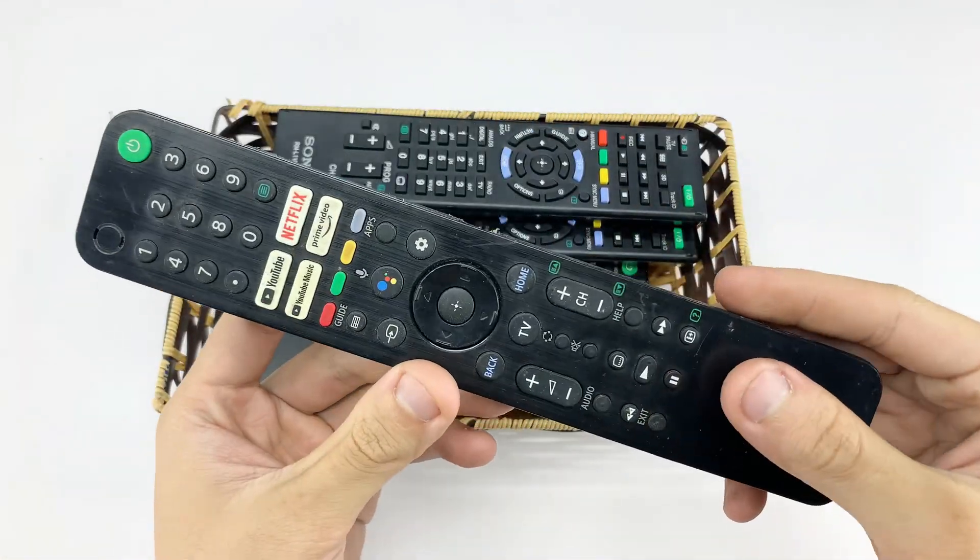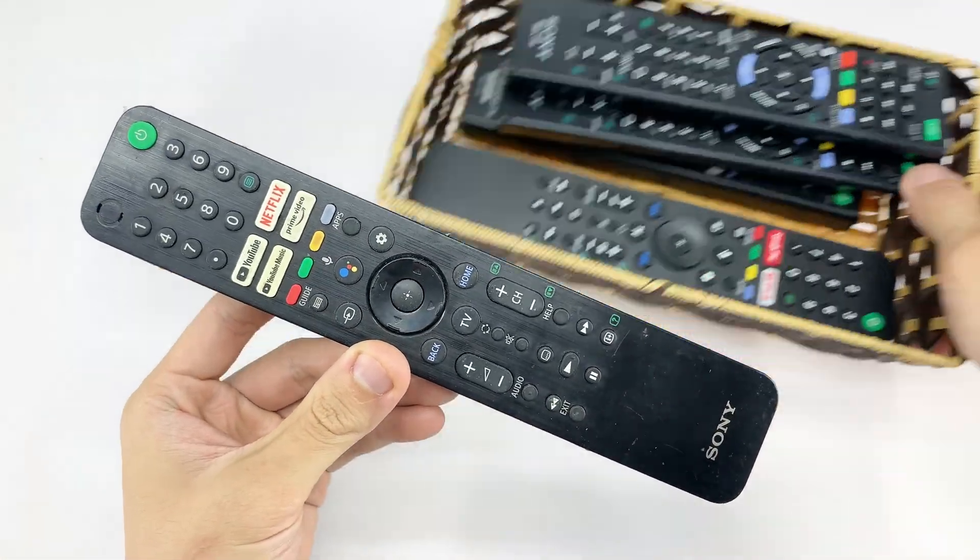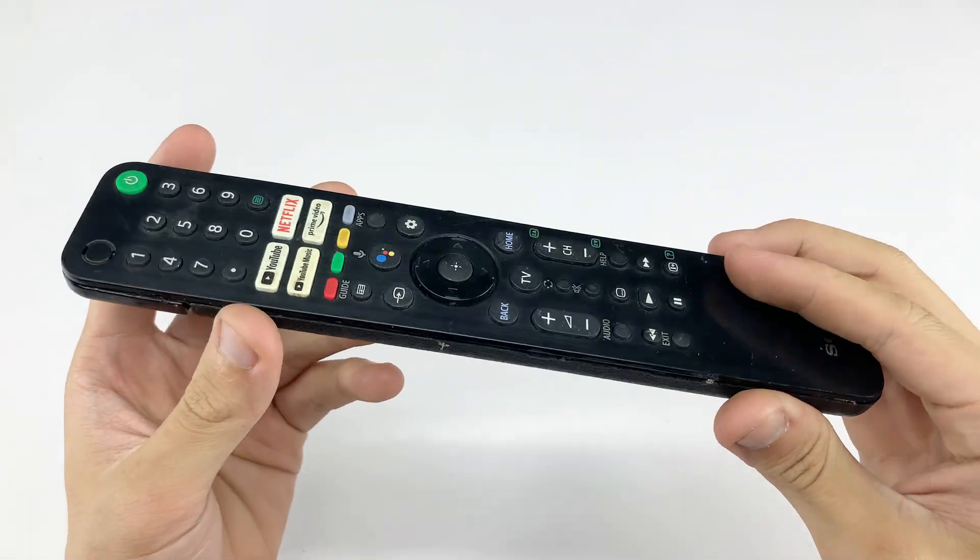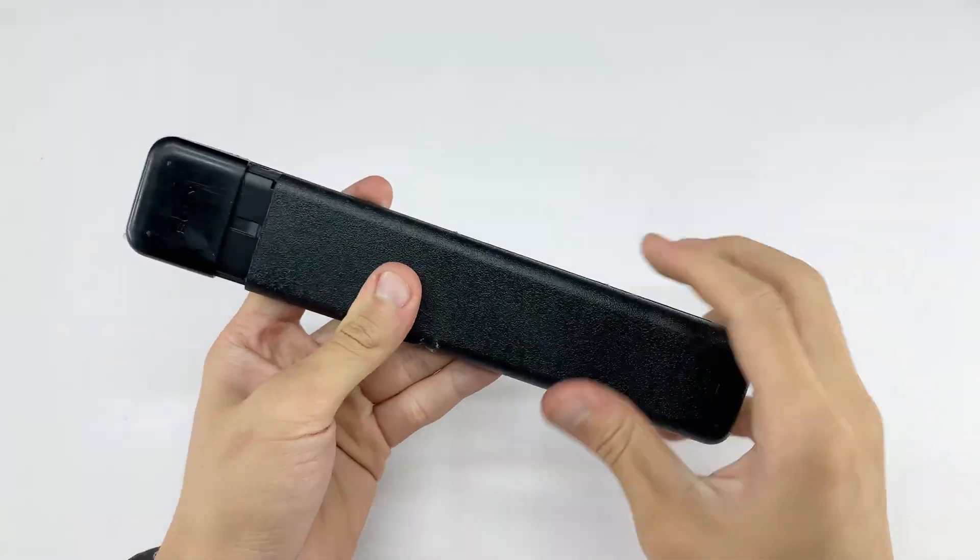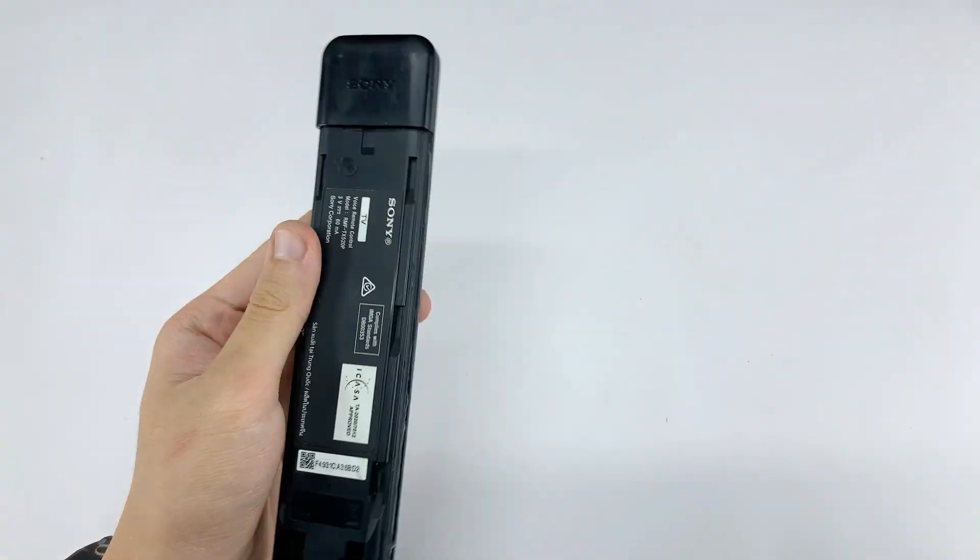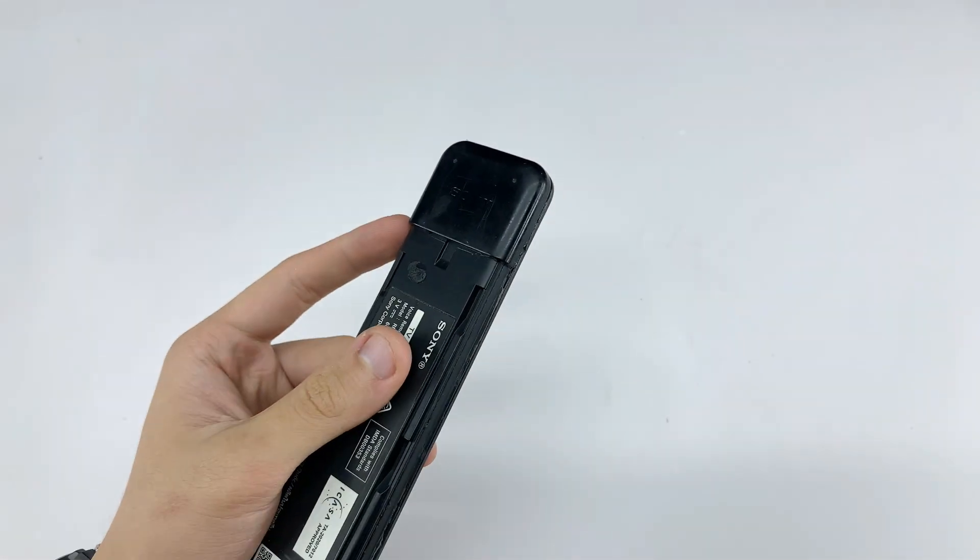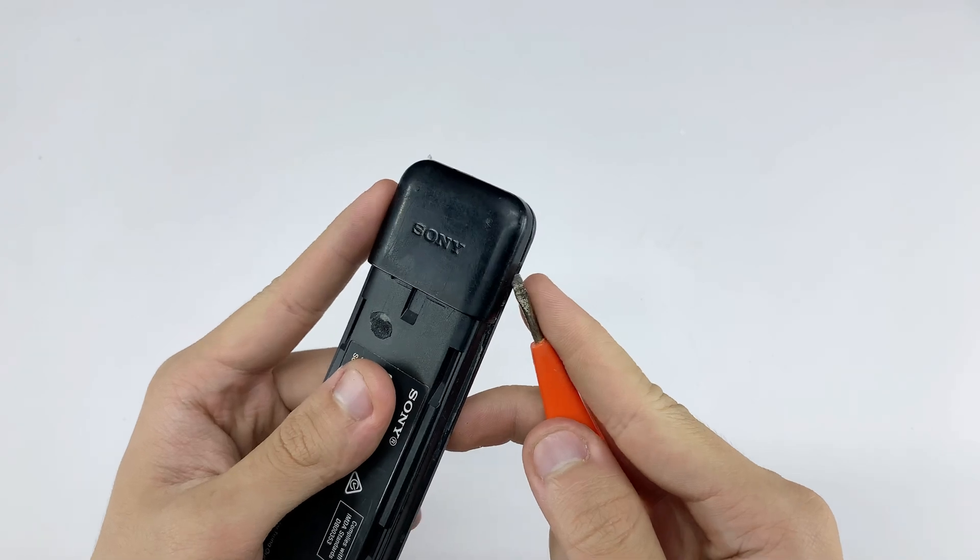I'm starting with this old, damaged TV remote. As you can see, its casing is broken, but the internal circuit board is often still perfectly functional. My goal is to carefully disassemble it to extract the valuable electronic components inside.